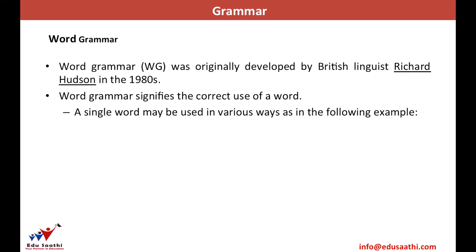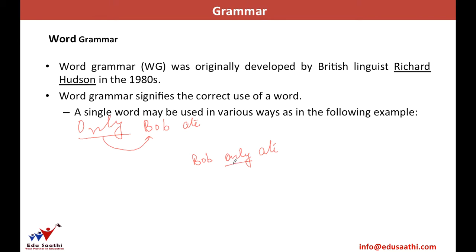Word grammar is required to understand whether or not a word is correct to be used in a sentence. We may be astonished to know that a misplaced word can change the entire meaning of a sentence. For example, in the sentence 'only Bob ate,' the word 'only' justifies that nobody else apart from Bob ate. Whereas if I write 'Bob only ate,' here 'only' justifies that Bob did nothing else apart from eating. Thus 'only' can change the meaning of the sentence — this is the impact of word grammar.